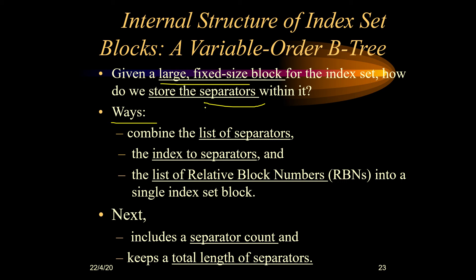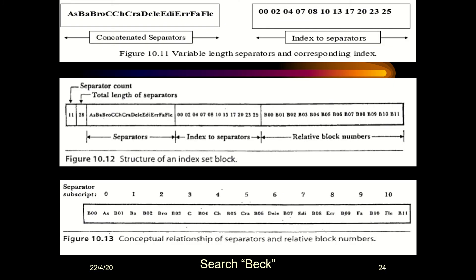The main ways of saving separators are: first, make a list of separators; second, create an index file for the separators with a pointer to each separator; third, have a relative block number — a reference number to the block that saves the separator. Fourth, include a separator count indicating how many separators are inside a node; and fifth, mention the total length of the separators. These are the five components included when saving a separator inside an index node.